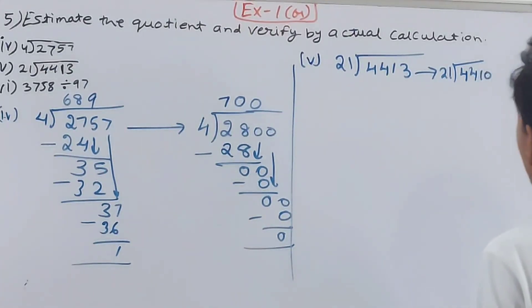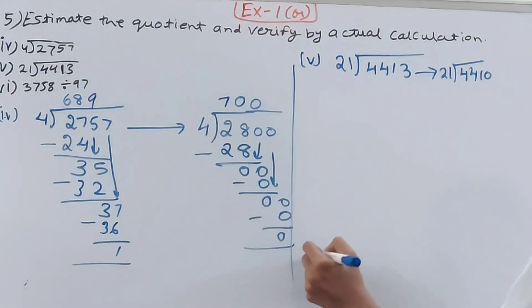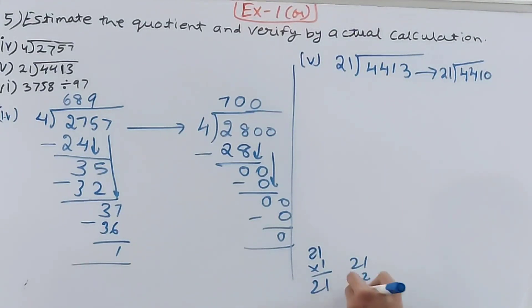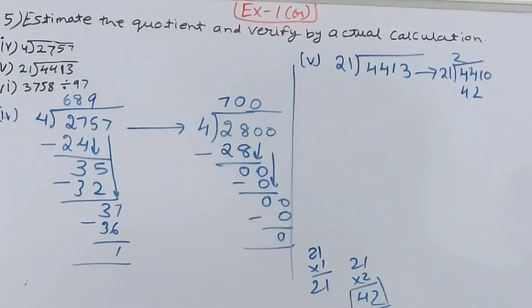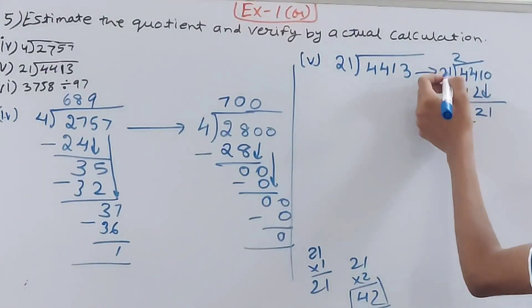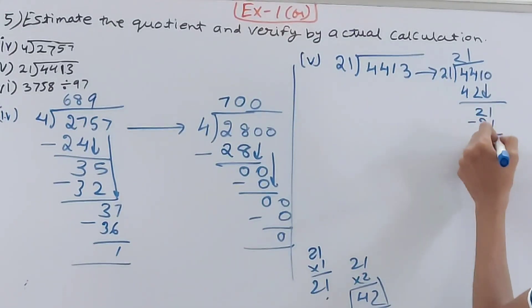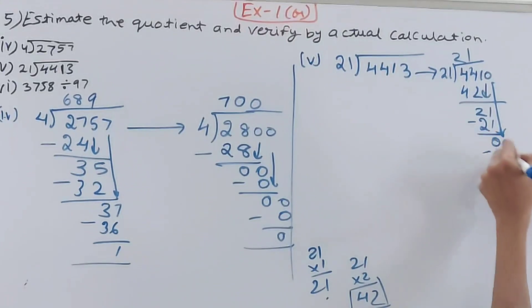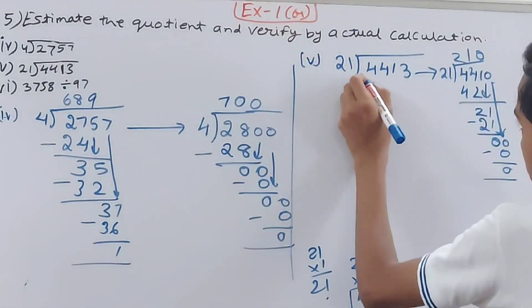For the estimated 4410 ÷ 21: 21 into 44 — 21 into 2 is 42, so 2 times. Minus 42, remainder 2. Bring down 1, giving 21. 21 into 21 is 1 time. Bring down 0, minus 0 — estimated quotient is 210.